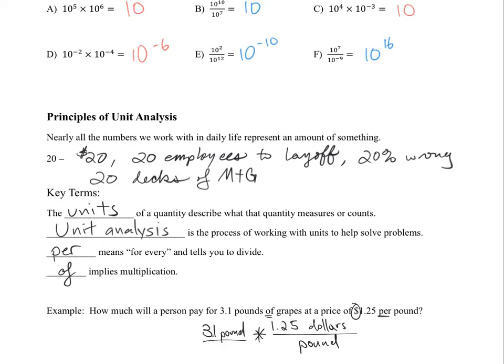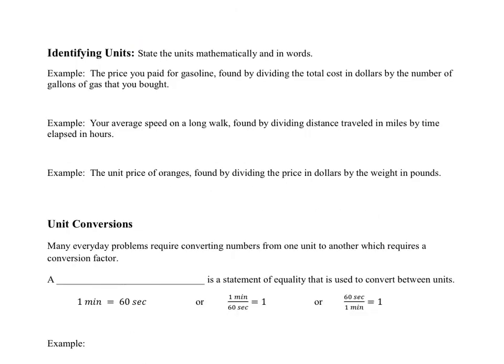And to that we are going to multiply 3.1 pounds. So kind of like what we were doing with the fractions over there on the other a few slides, we can also cancel units. So pounds will cancel with pounds, leaving us with 3.1 times 1.25 dollars. And when you multiply those two numbers together, you'll get 3.88 dollars. But this time I will use the dollar sign. So this is how units work.